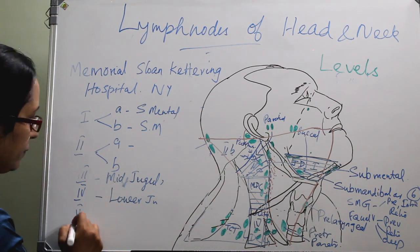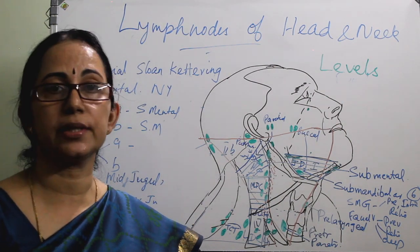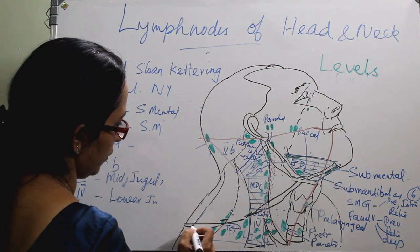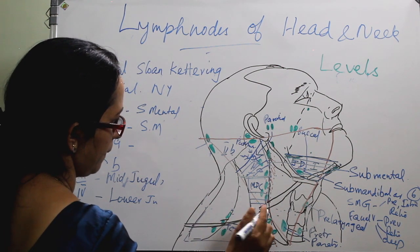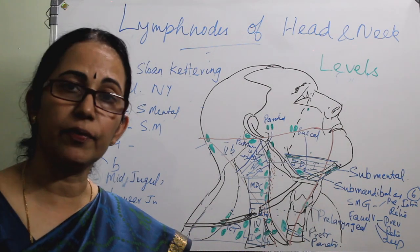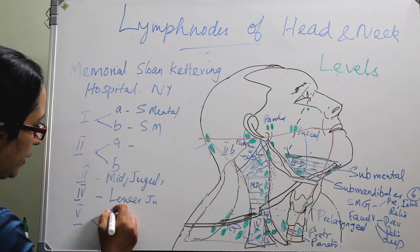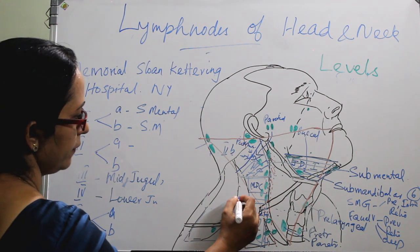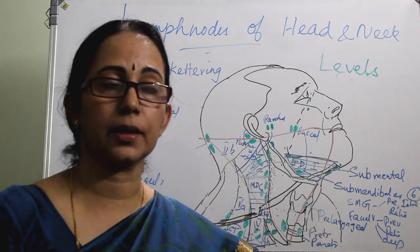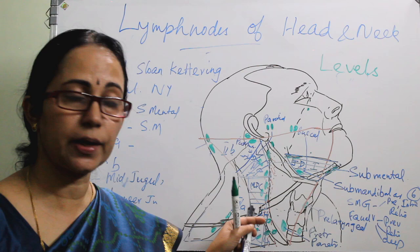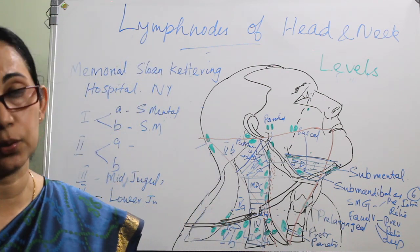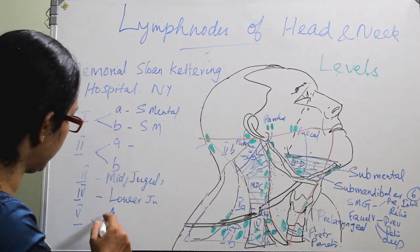Level 5 is the posterior triangle group. Within the posterior triangle, the omohyoid muscle divides level 5 into level 5A and level 5B. Level 5A drains mainly the nasopharynx, and level 5B drains the region along the thyrocervical vessels, mainly the thyroid gland.